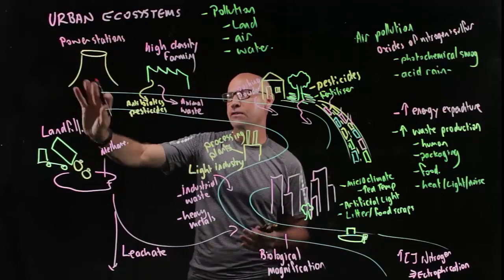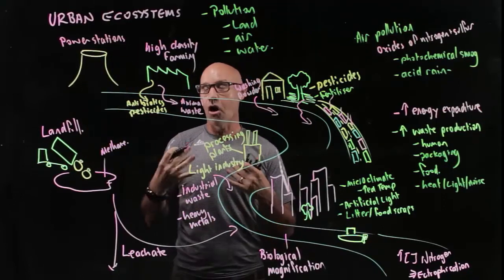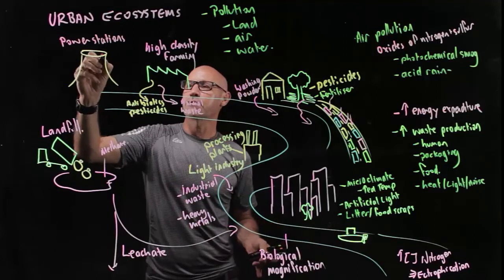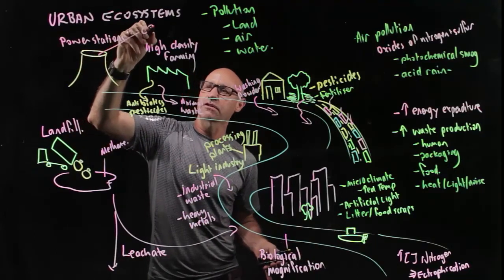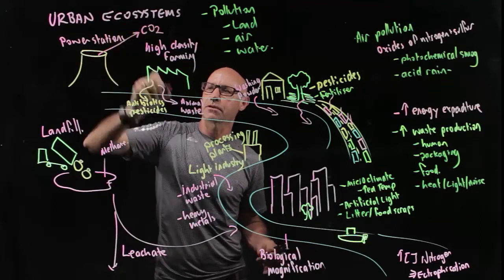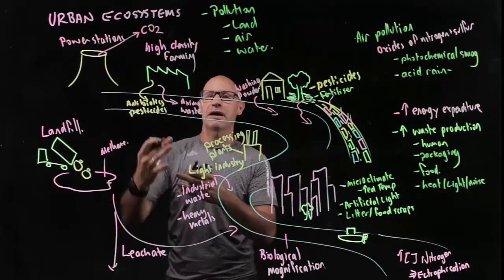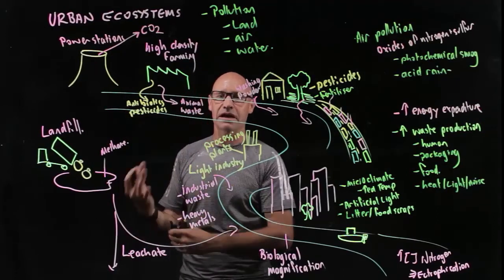So we've got power stations in Australia. They're usually coal-fired power stations. So we've got carbon dioxide going up into the atmosphere as a greenhouse gas. We're taking carbon out of the ground and burning in the power stations. So we're disrupting that carbon cycle.